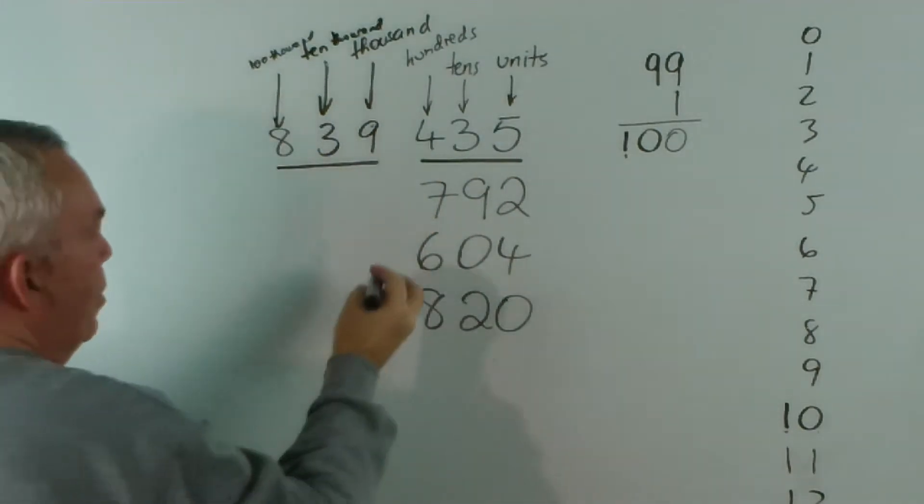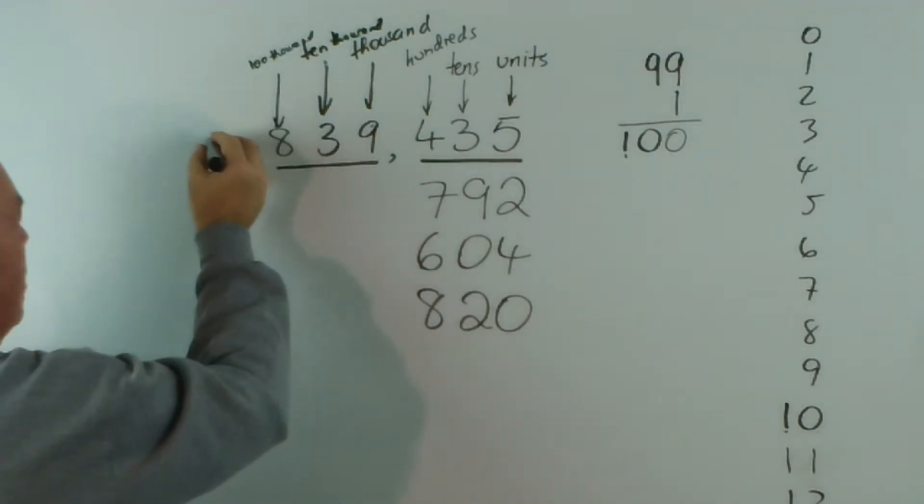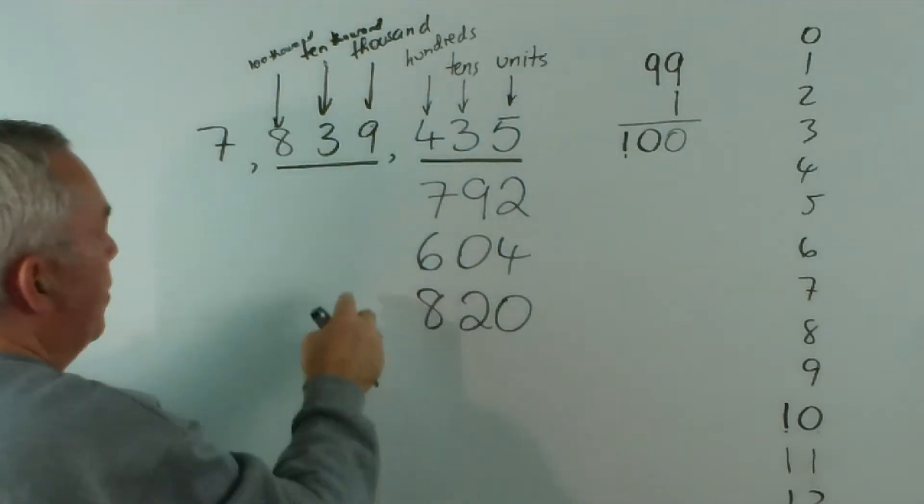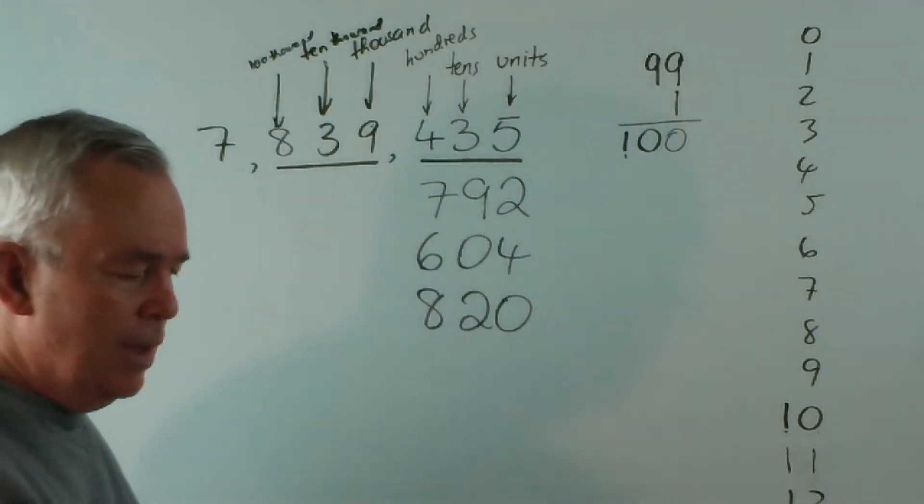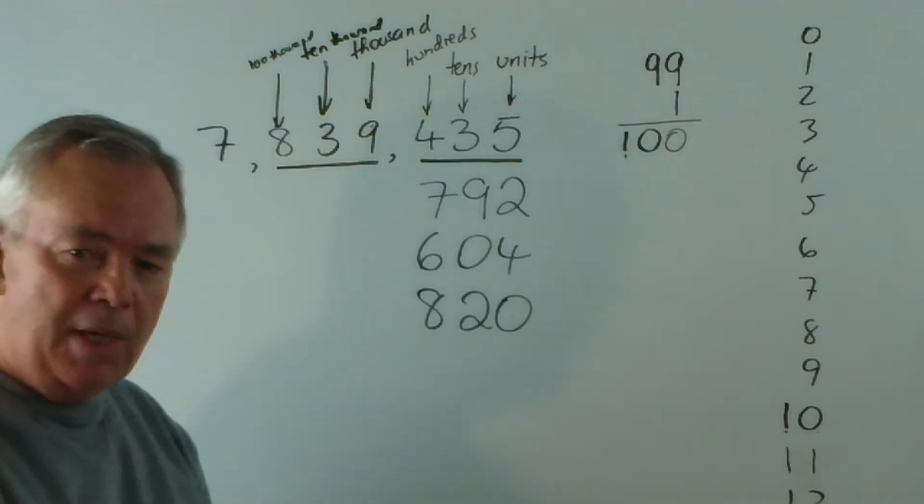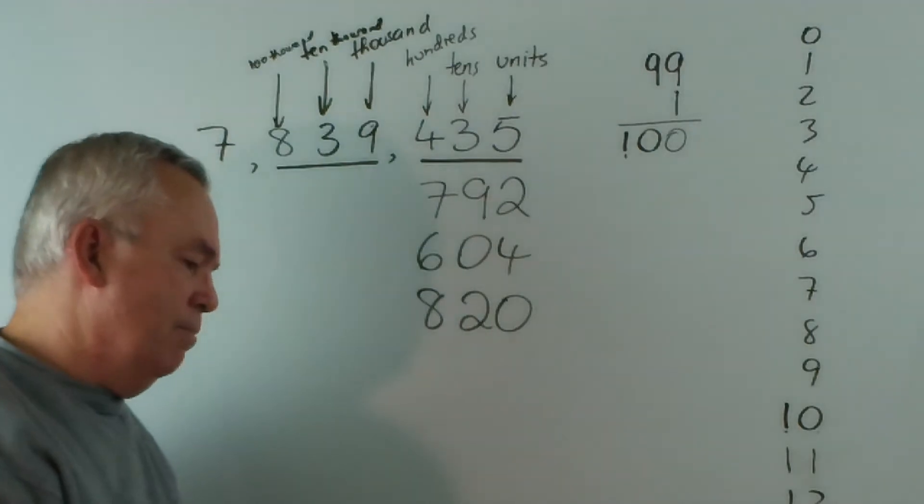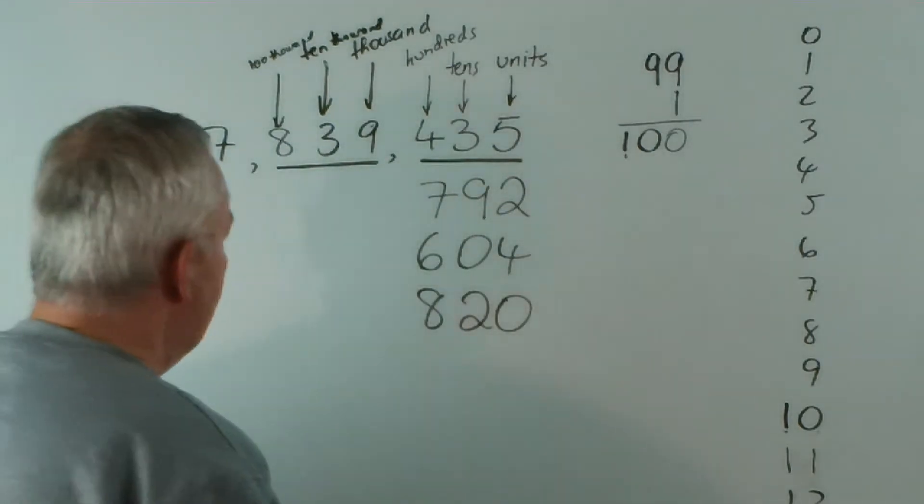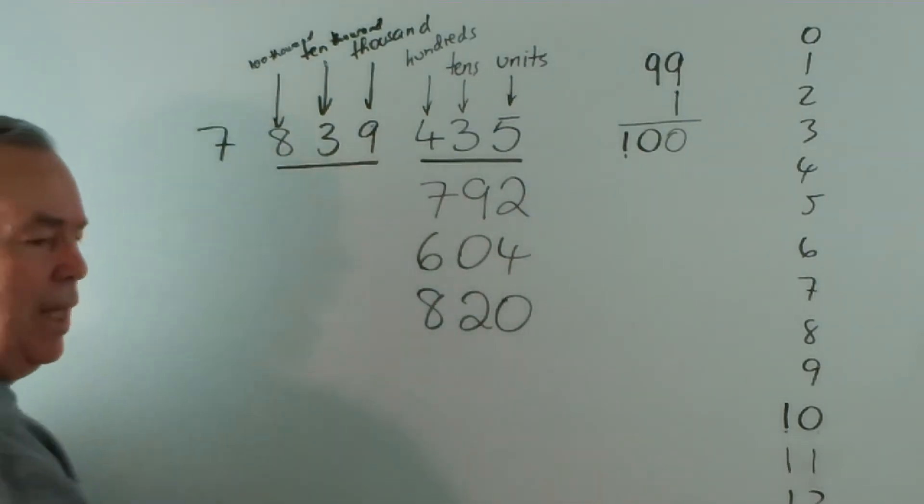We write our numbers in bundles of three. Now, when I was growing up, we used to put commas here. The next one over here would be, let's say, a seven. But we used to put commas to separate our groups of three.